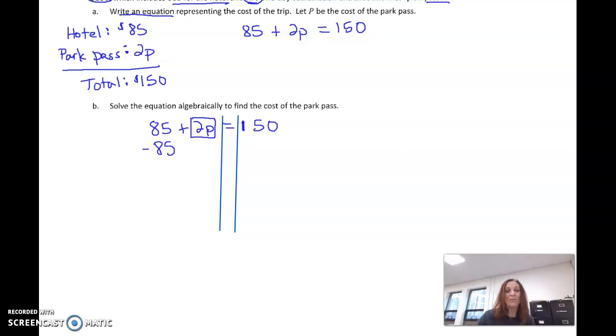So yes, we are subtracting 85, or you can think of it as combining it with a negative 85. Whatever we do to one side, do to the other. That cancels out. I'm left with 2 times P equals 150 minus 85 is 65. Now, this is 2 times P. I've done the addition and subtraction level. Now, let's go multiplication and division. This is multiplying, so I undo that by dividing. We always divide by whatever that coefficient is. 2 divided by 2 is 1P. Whatever I do to one side, I do to the other.